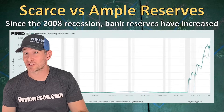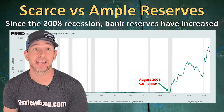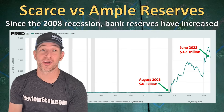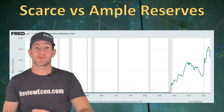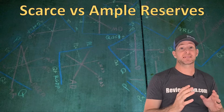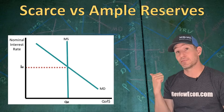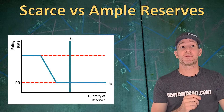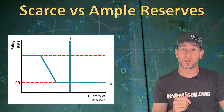Since the 2008 Great Recession, reserves within banks have dramatically increased. In the middle of the Great Recession in 2008, we had 46 billion dollars in bank reserves within United States banks, but today we have over 3.2 trillion dollars worth of reserves. So we essentially went from a scarce reserve system to an ample reserve system. On your macroeconomics exam you need to know both models. The scarce or limited reserve system primarily uses the money market graph, while the ample reserve system uses the reserves market graph.